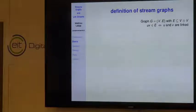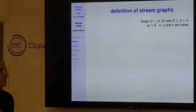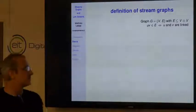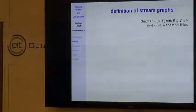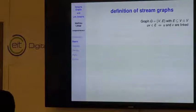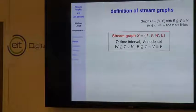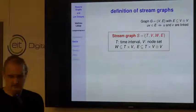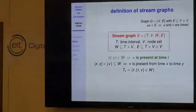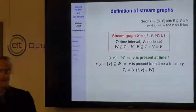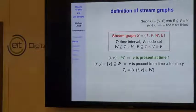Let me enter the technical part by giving the definition of what we call a stream graph. Recall that a graph is defined by a set of nodes and a set of links, each link being an ordered pair of distinct nodes. A stream graph is defined by four sets: a first set T that is a time interval, a node set V, a set W representing the time presence of nodes—W is a subset of T×V, where (t,v) in W means that v is present in the stream at time t.